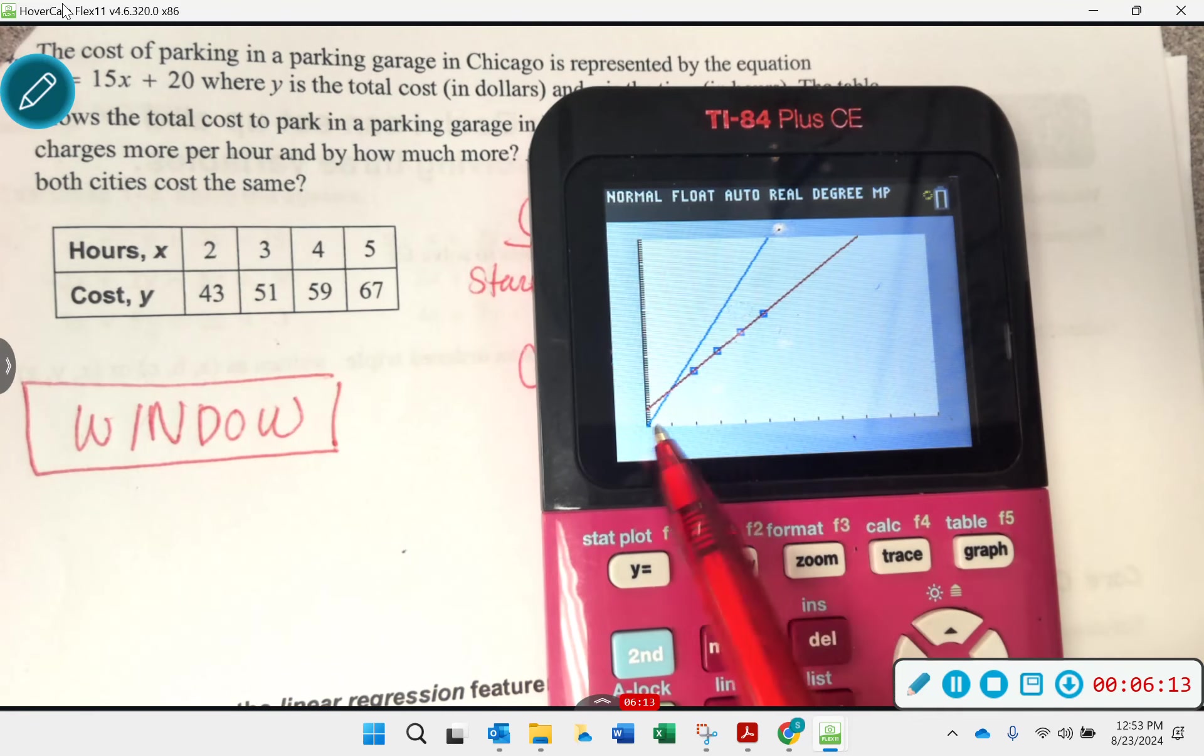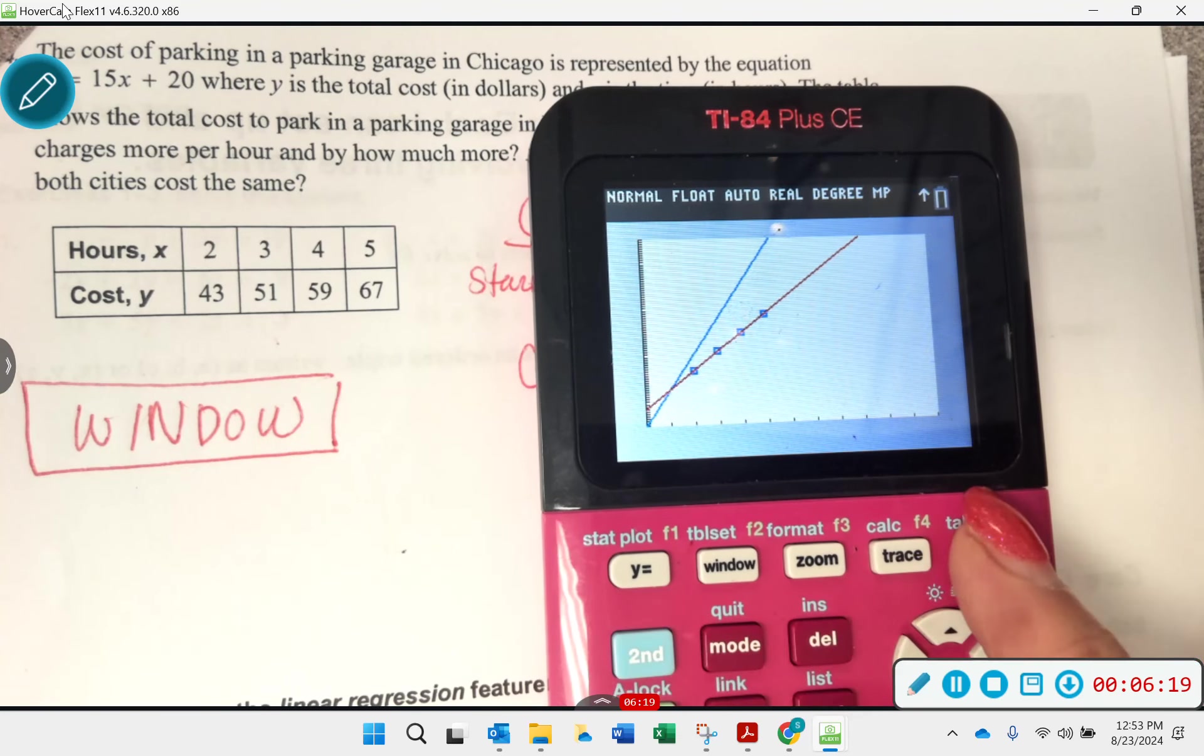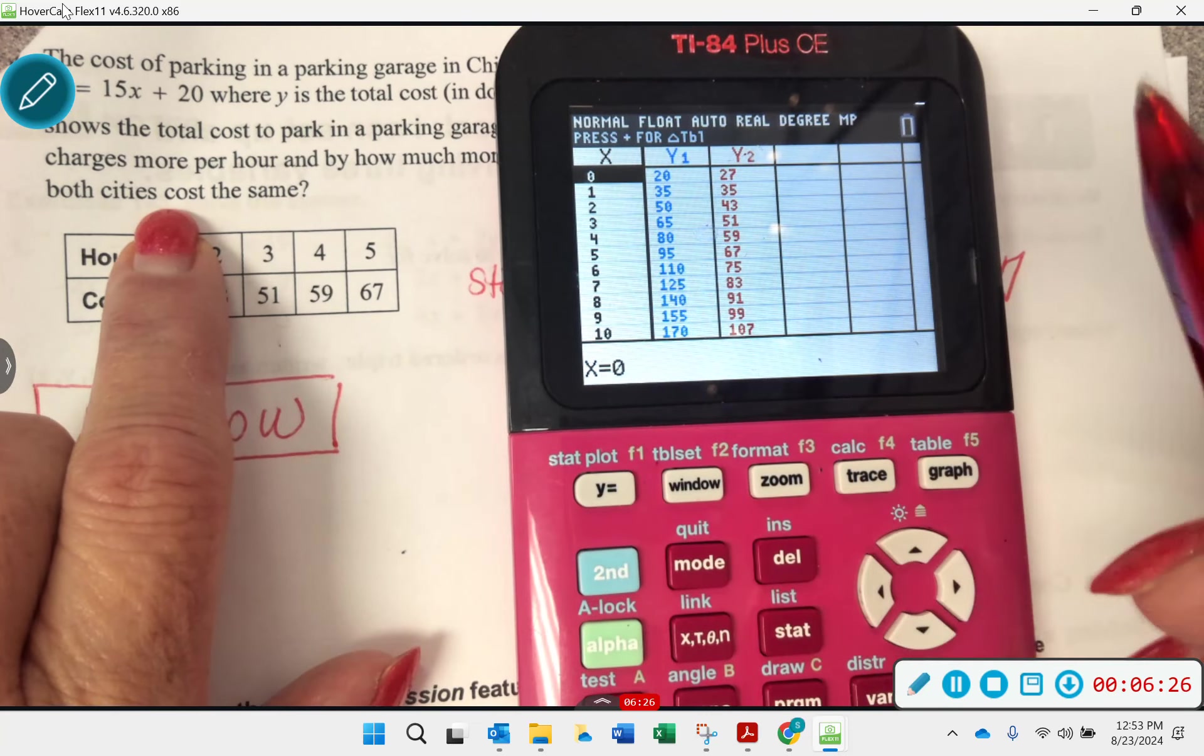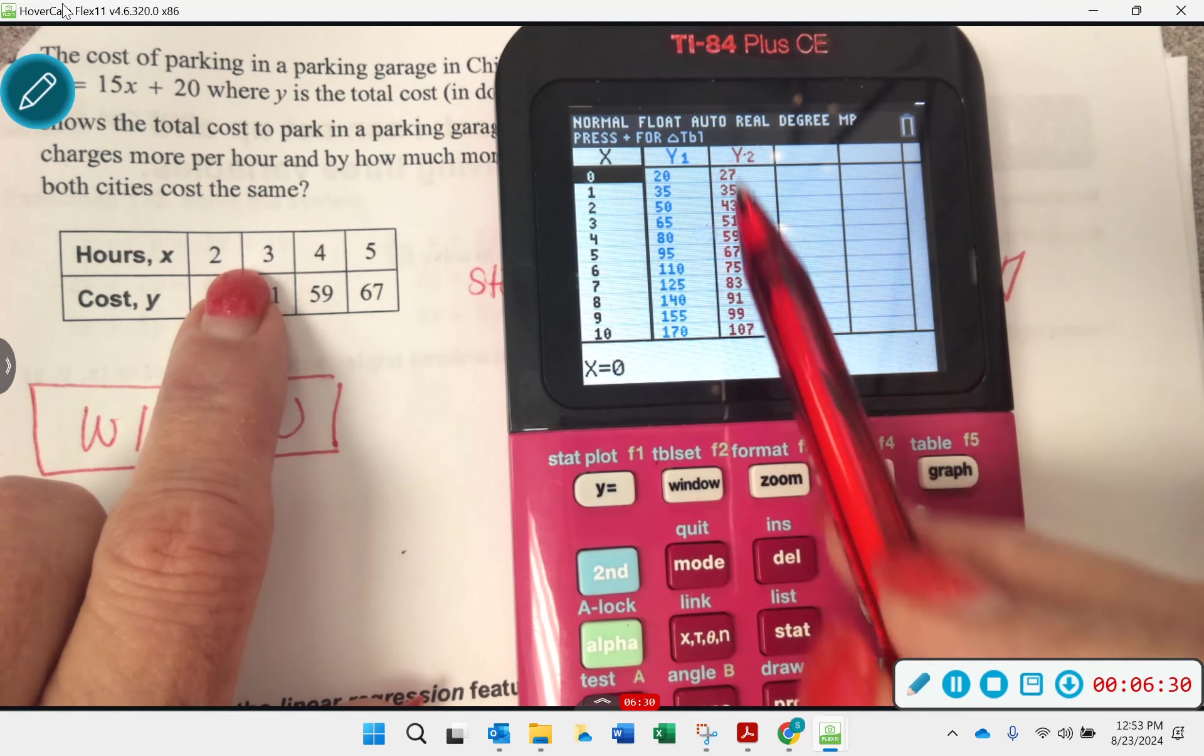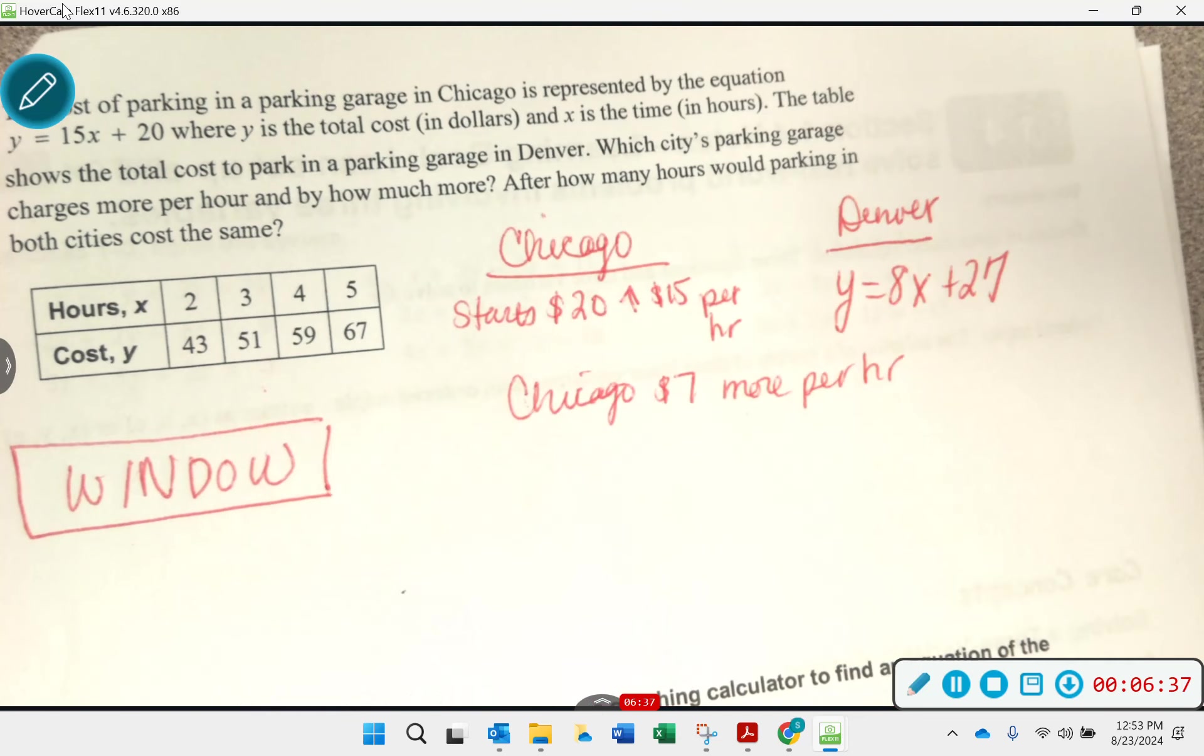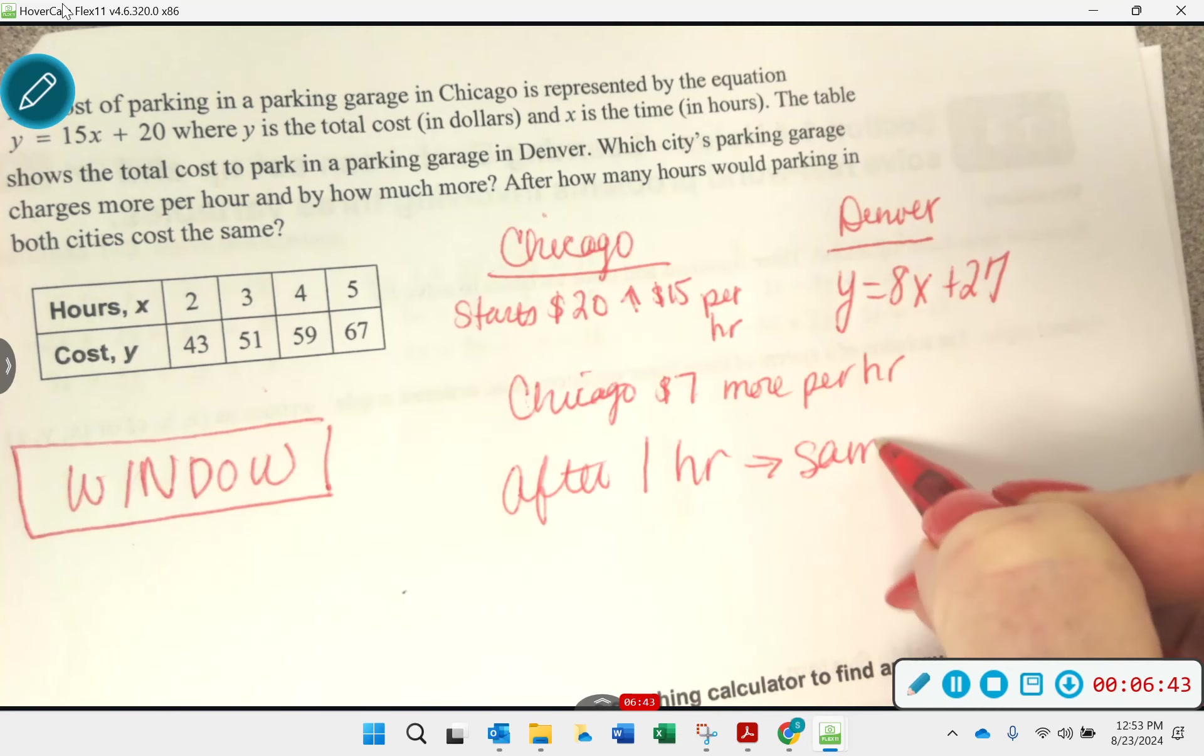So here's my one line. And here's the other line. See how it looks better now? I can see more accurately what's going on. And now I'm going to take a look at my table of values. And the question here was asking, after how many hours would parking in both cities be the same? So this is Chicago and this is Denver. How long does it take for them to be the same? Just one hour.